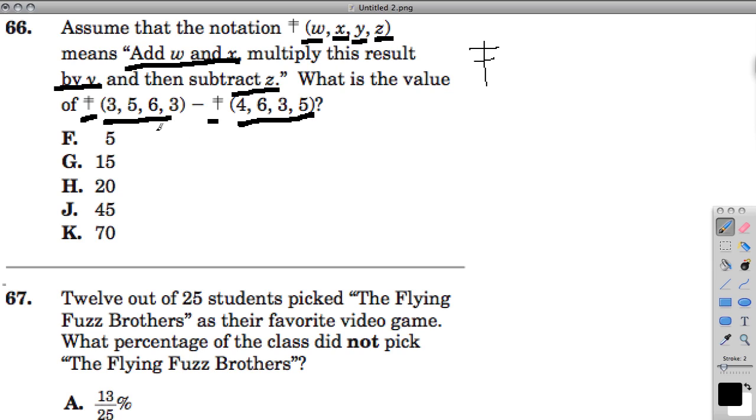So we're going to add w and x, the first two numbers. We get 8, and then we're going to multiply it by y. y is 6, so 8 times 6 is 48. Then we subtract z from that. z is 3, so it's 48 minus 3, which is 45.